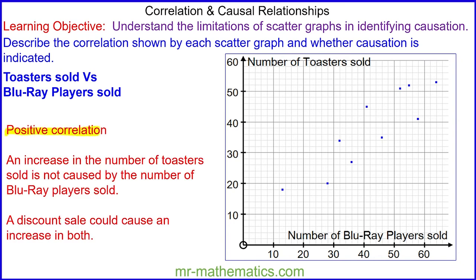Okay, there is a positive correlation because as you can see, as the number of Blu-ray players sold increases, so does the number of toasters sold. However, an increase in the number of toasters is not caused by the number of Blu-ray players sold. A discount sale could have caused an increase in both. So again, this positive correlation does not imply causation.